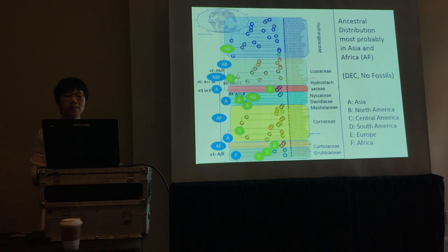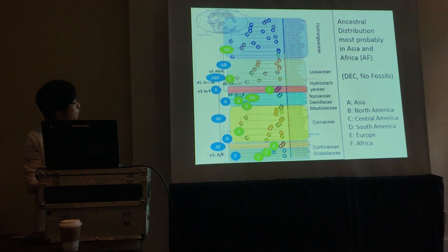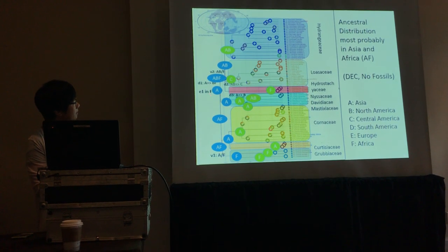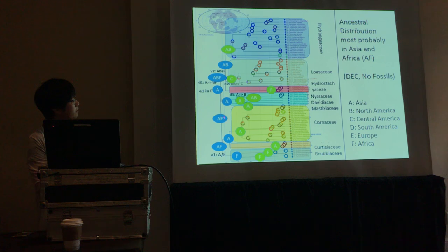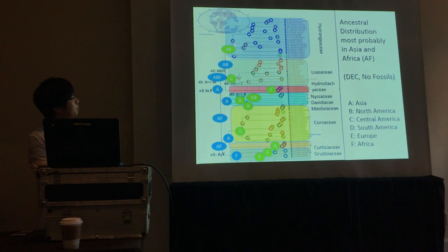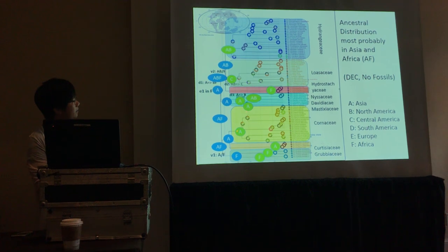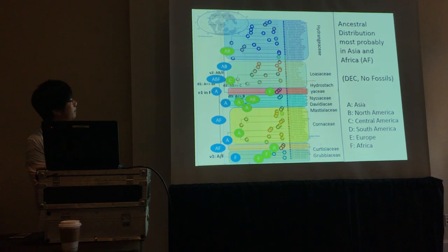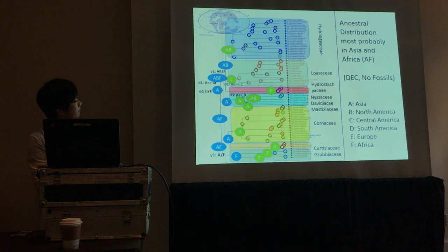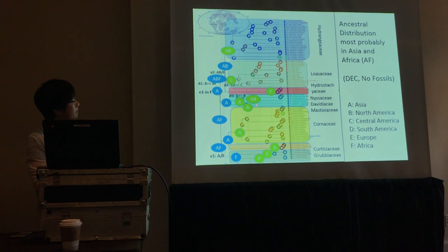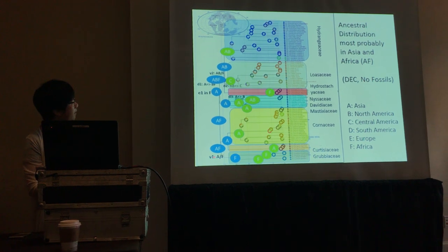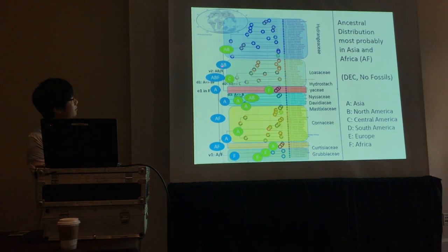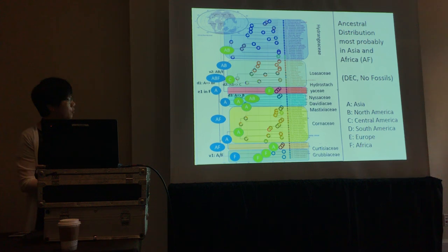The biogeographic inference without fossils suggested that the ancestral distribution of the order is most likely Asia and Africa, and the ancestral distributions of the crown nodes of the different families are indicated in green — Asia, Africa, Asia and North America — and the formation of these families involved early vicariance events, extinction events, and dispersal events during the middle Cretaceous time.